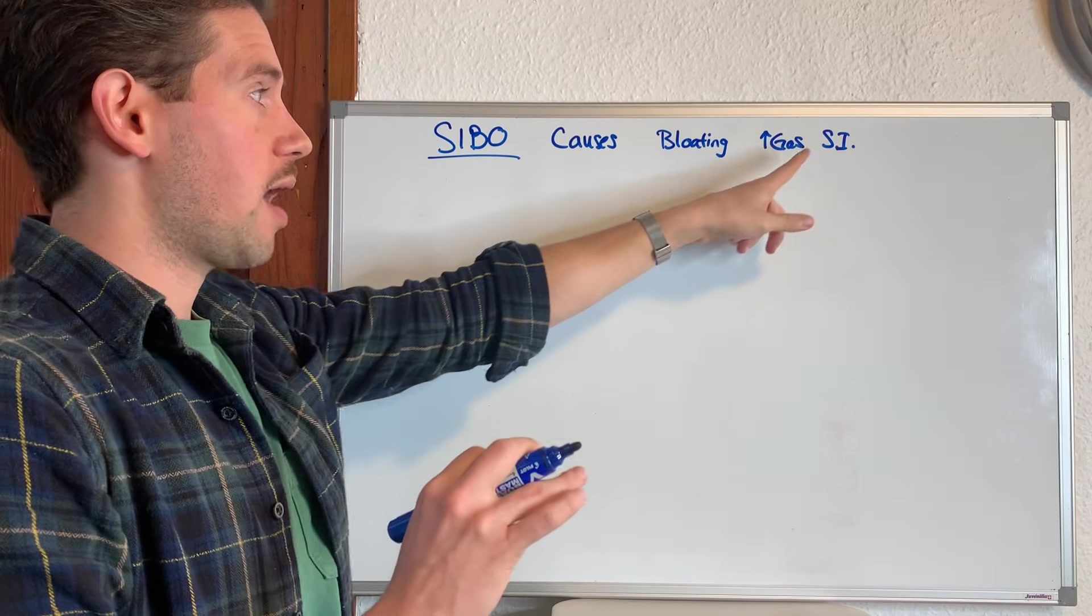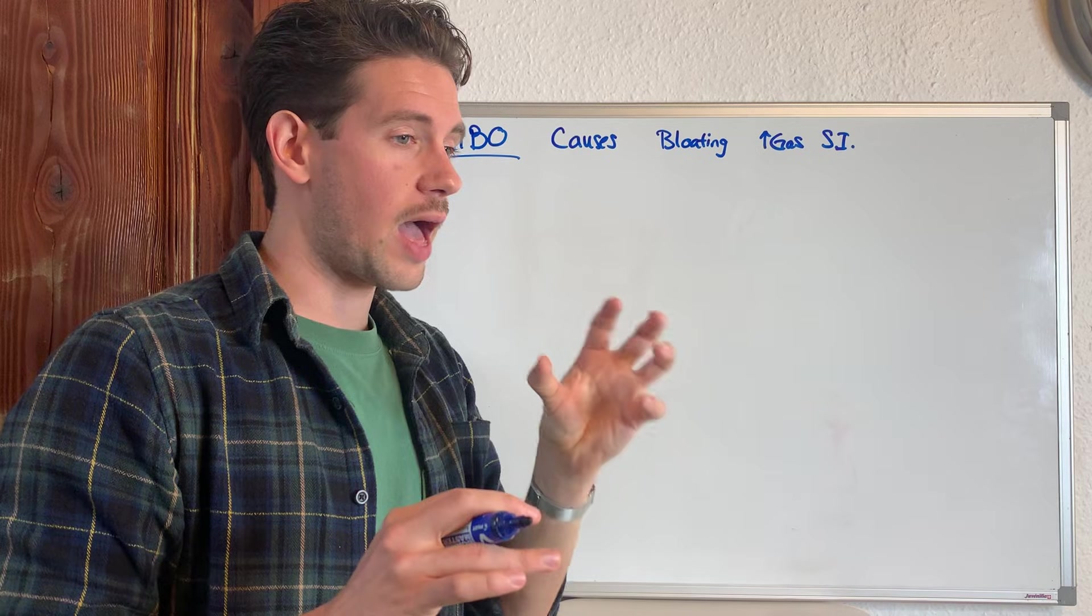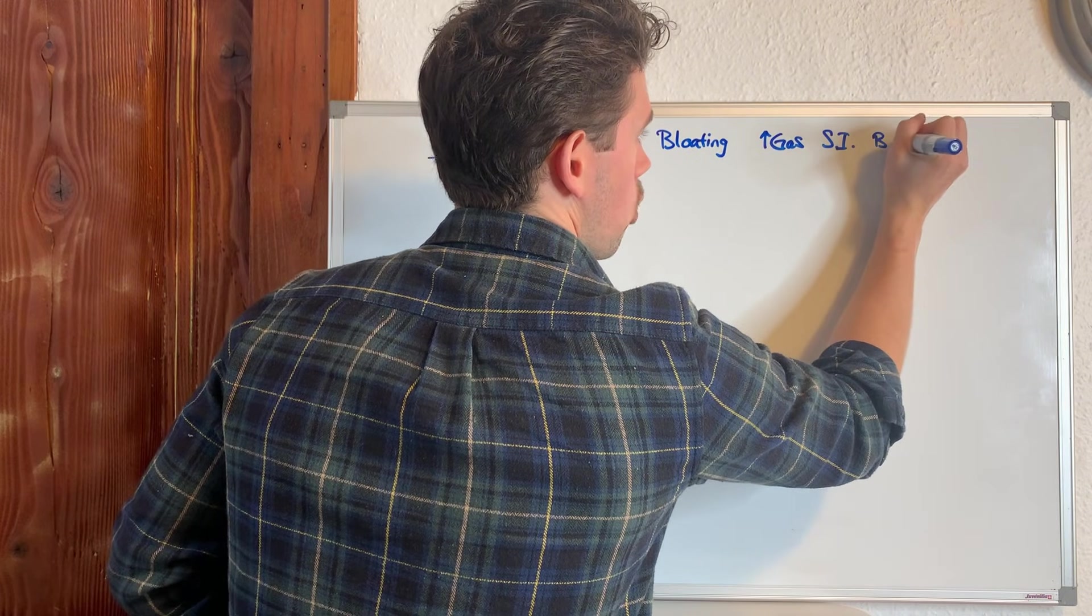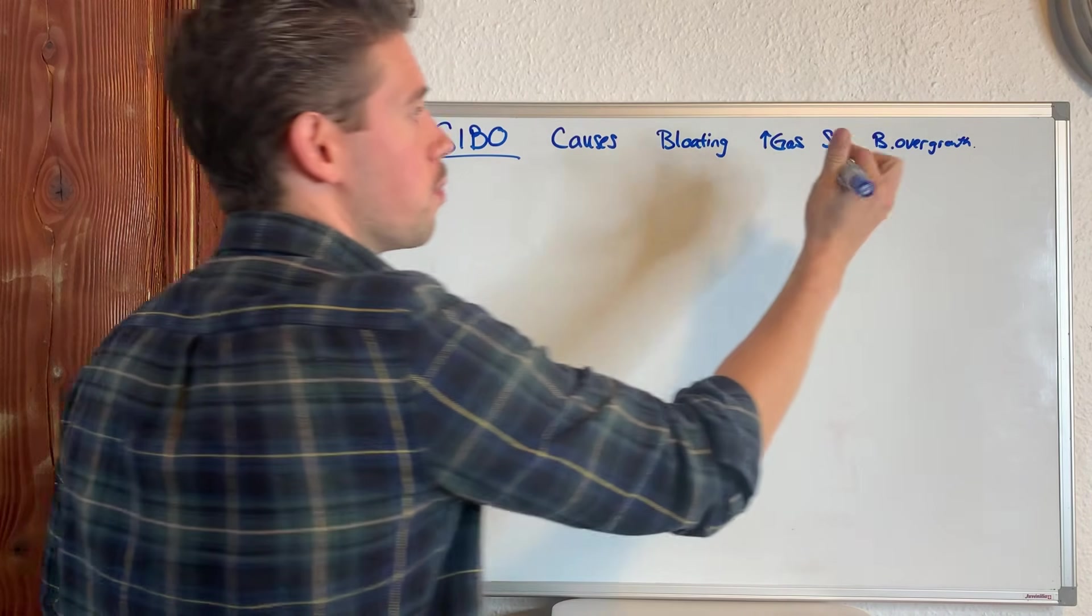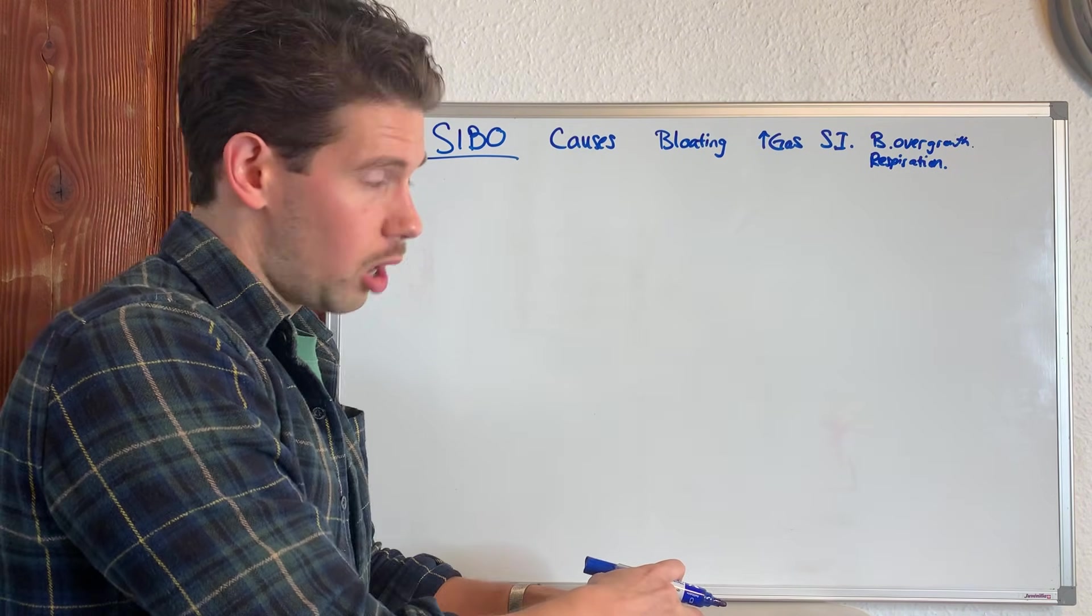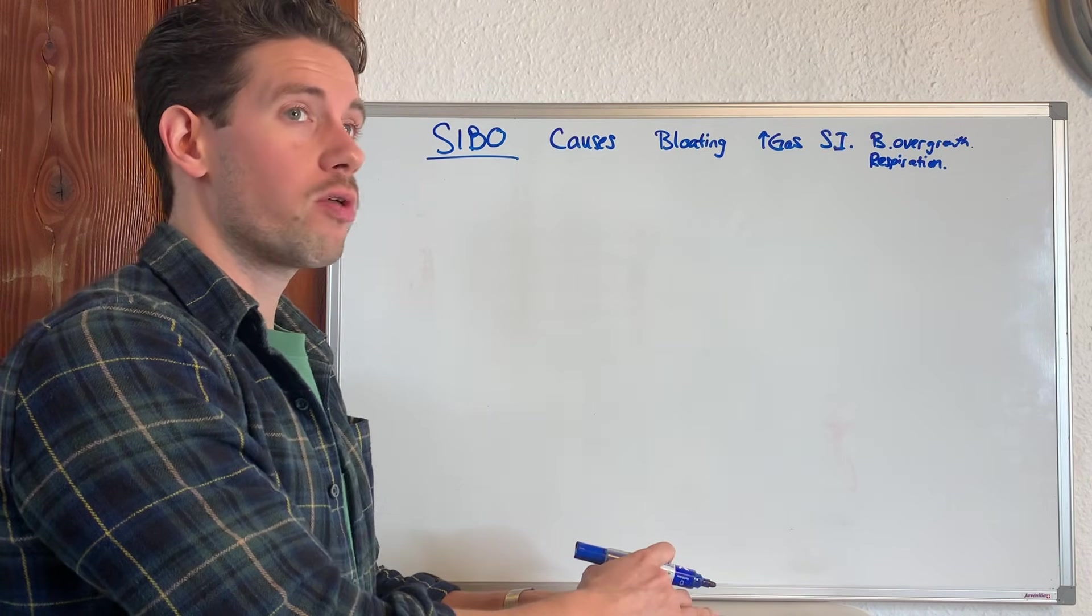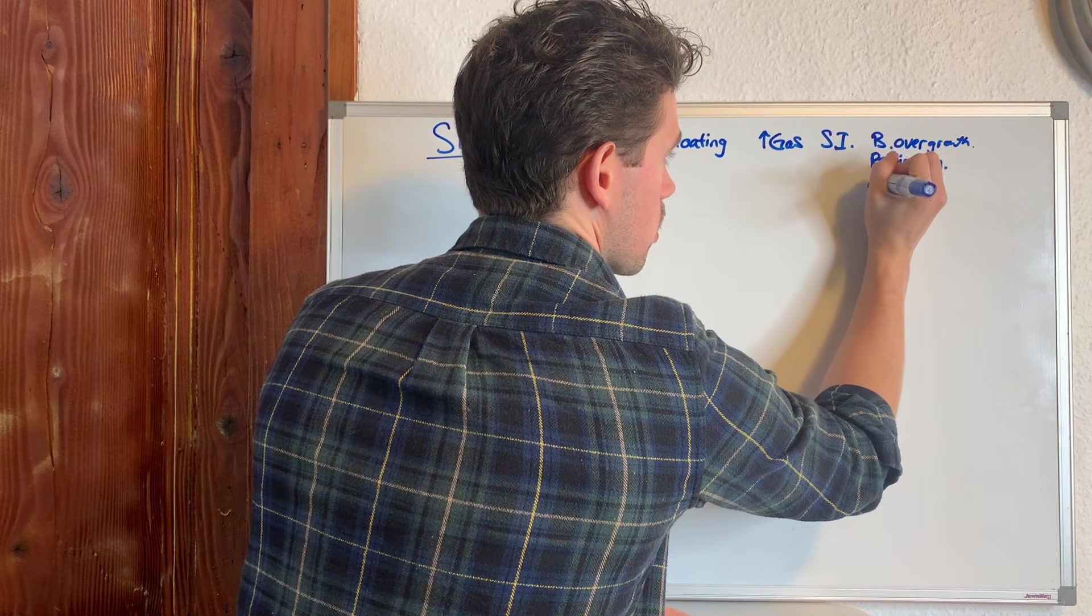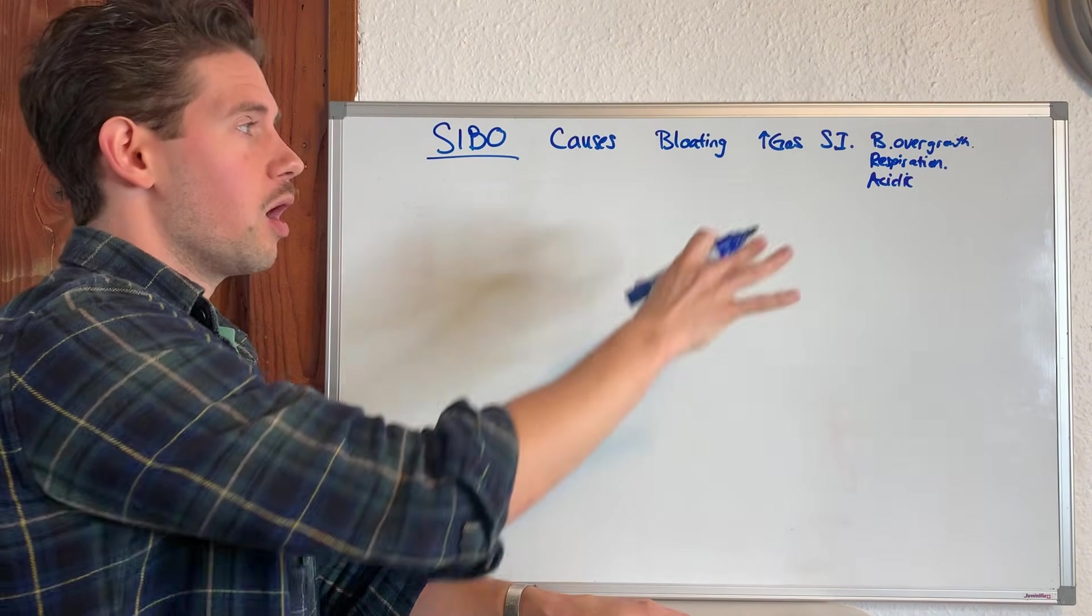And so when we talk about gas and small intestinal bloating that's caused by the bacterial overgrowth, the gas that's being produced is caused by bacterial overgrowth where the bacteria are going to be undergoing respiration. So all lactic acid bacteria and the types of bacteria that are going to cause SIBO, not all of them are going to only produce gas, but they'll produce other lactic acids. So there'll be more acidic types of concerns going on within the gut as well.